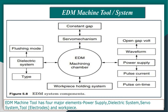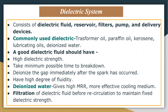The dielectric system is the first component of the EDM process. It consists of dielectric fluid reservoir, filters, pump, and delivery devices. A good dielectric fluid has different properties — it should have high dielectric strength, meaning it should not break down easily. It should remain electrically non-conductive even with a very high voltage applied, until the required breakdown voltage between the electrodes is attained.